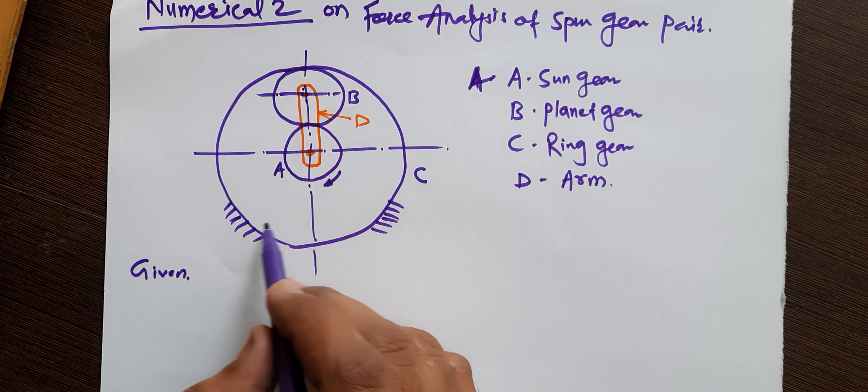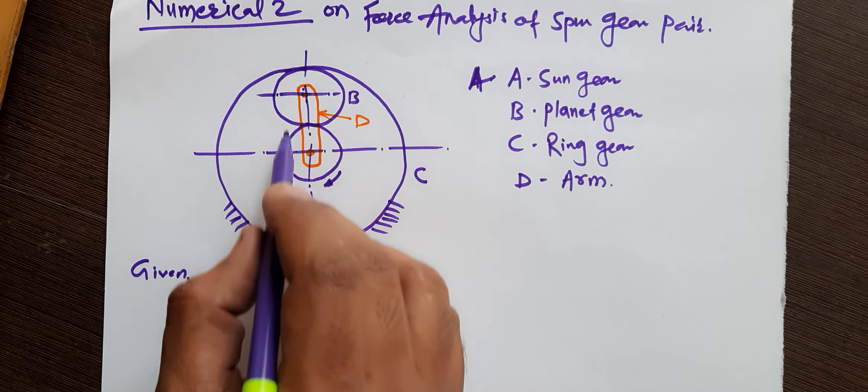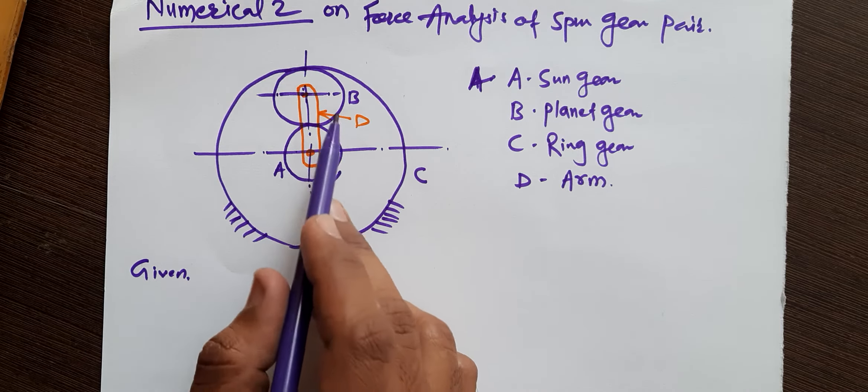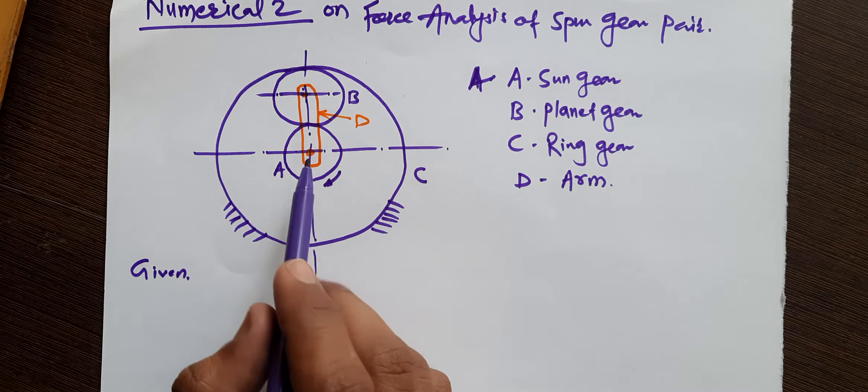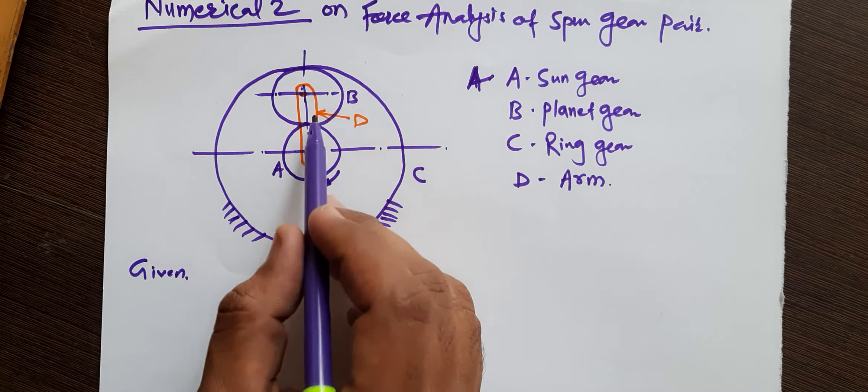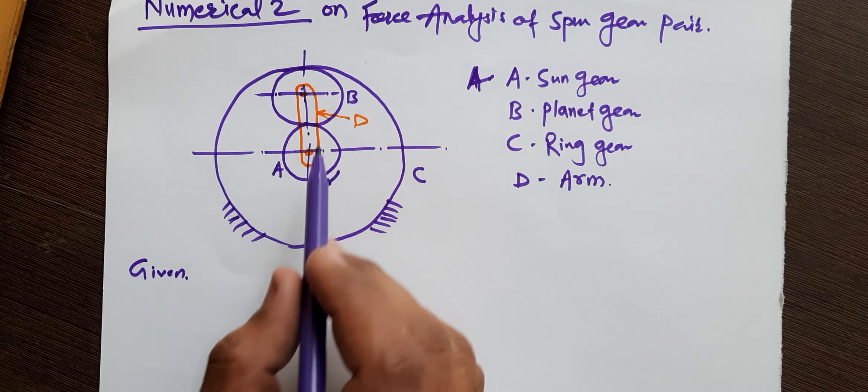So four parts are there: A, B, C - three are the gears, out of which A and B are external gears and C is an internal gear, and D is the arm.